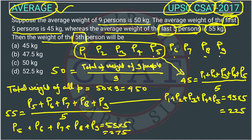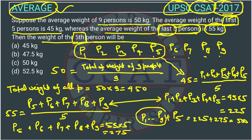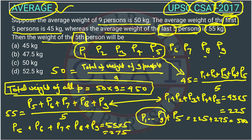Now we know the total weight of all people. If we add these two equations, it will become: p1 + p2 + p3 + p4 + p5 + p5 (we have p5 here also, so 2p5) + p6 + p7 + p8 + p9. This equals the total weight of all persons p1 to p9, plus one extra p5. So 225 + 275 equals 500, and we know the total weight of all people is 450. Therefore 450 + p5 = 500.